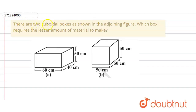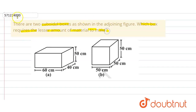In this question there are two cuboidal boxes as shown in the figure, and we have to find which box requires the lesser amount of material to make. So here we have to find the total surface area of both cuboidal boxes and find out which one has the lesser surface area.